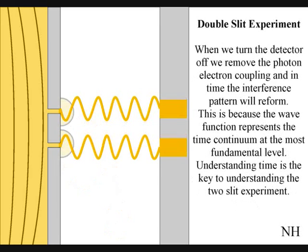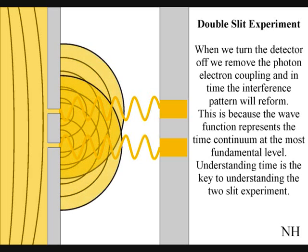If we turn the detector off, we remove the photon-electron coupling, and in time, the interference pattern will reform.